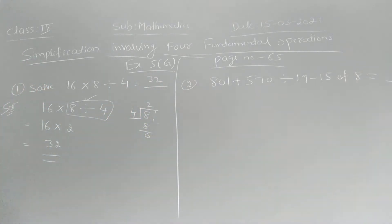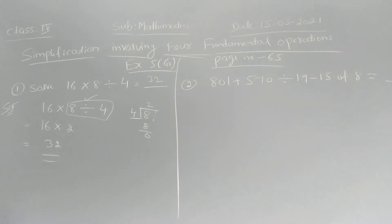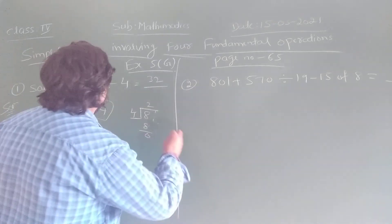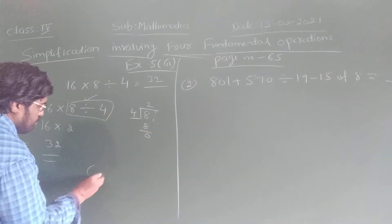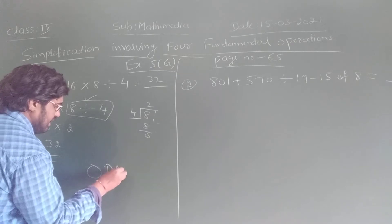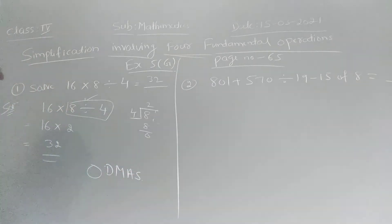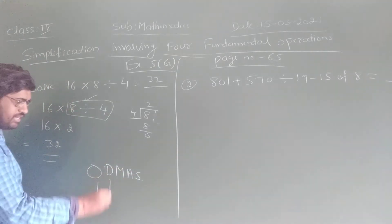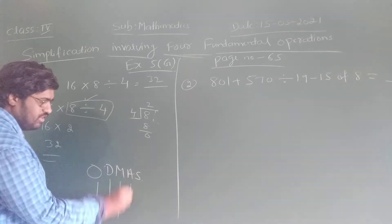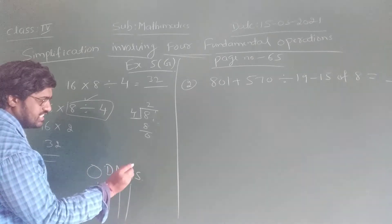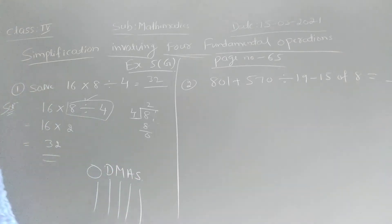You have to maintain the order like this: O, D, M, A, S. O means off. D means division. M means multiplication. A means addition. S means subtraction. You have to maintain this order.